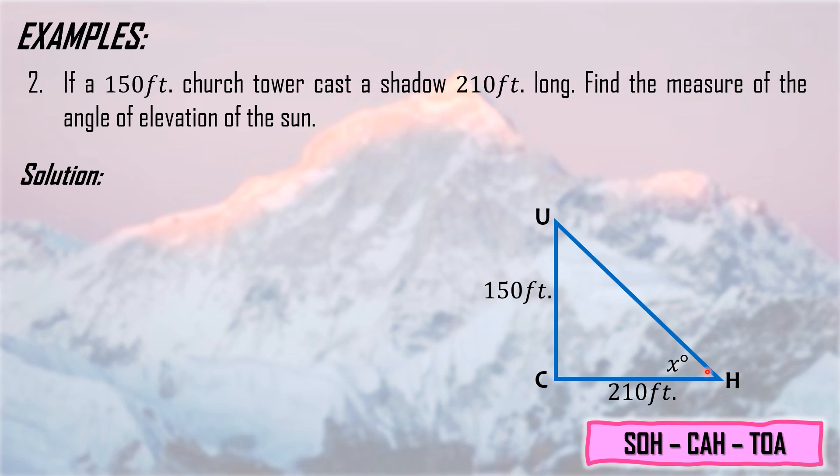Let us find the given formula. For X degrees, the opposite is 150 feet and the adjacent is 210. So we will use tangent. This will become tangent theta equals opposite over adjacent. Substitute the given values: tangent X degrees equals 150 feet divided by 210 feet. Dividing 150 by 210 gives a quotient of 0.714 feet.